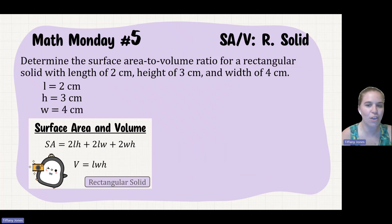Determine the surface area to volume ratio for a rectangular solid of length 2, height 3, and width 4.